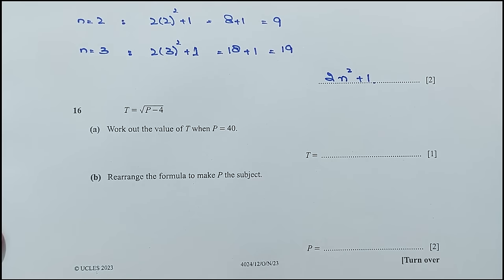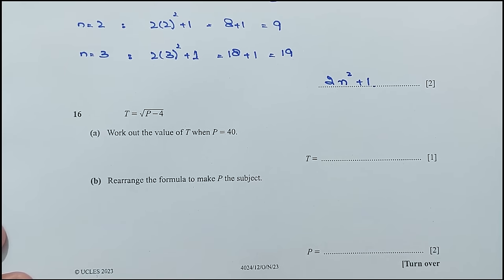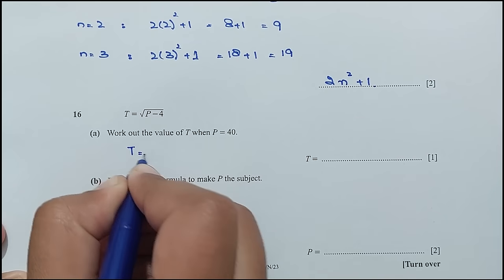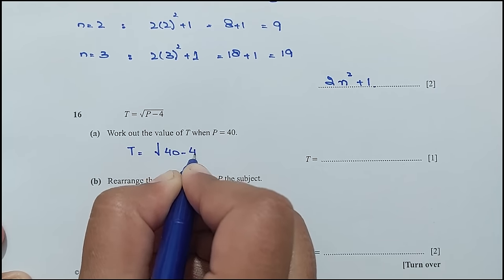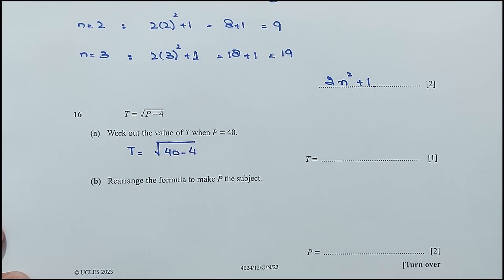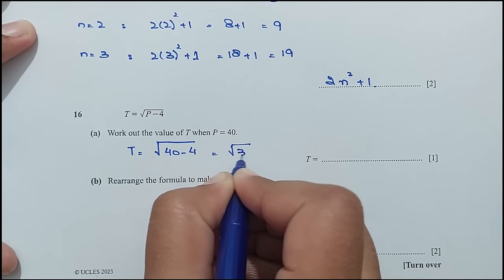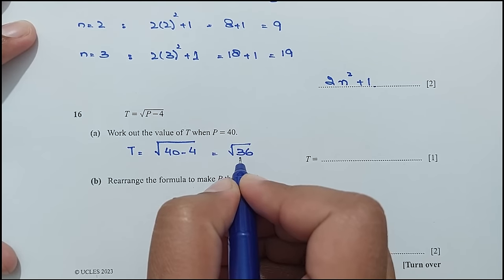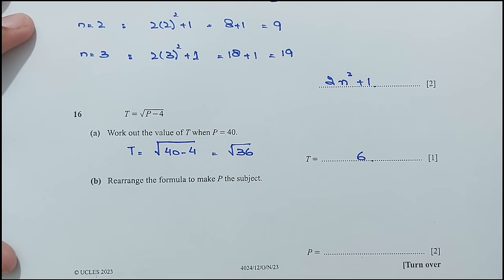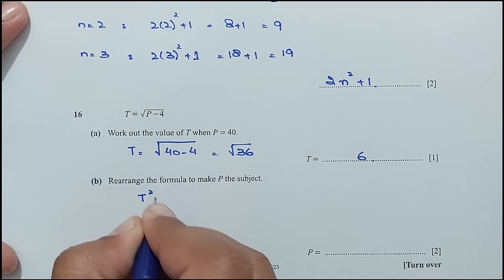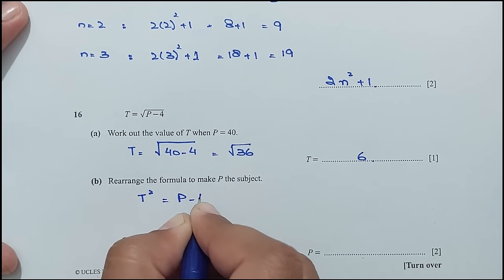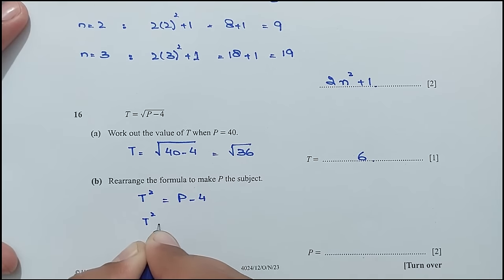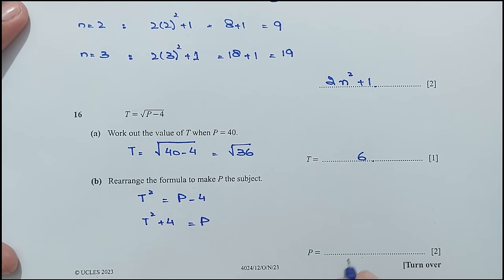Question number 16, part A: work out the value of T when P is 40. T equals square root of (40 minus 4) equals square root of 36, which equals 6. For part B: rearrange the formula to make P the subject. Squaring both sides gives T² = P minus 4, so P equals T² plus 4.